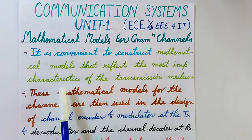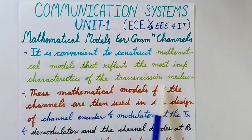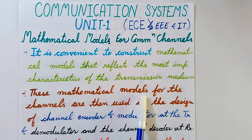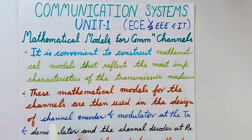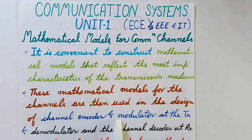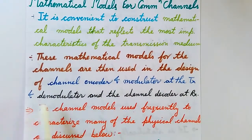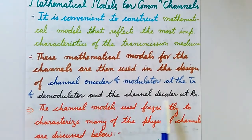It is convenient to construct mathematical models which reflect the most important characteristics of the transmission medium, that is, the physical channels. These mathematical models for the channels are then used in the design of the channel encoder and modulator at the transmitter, and of the demodulator and channel decoder at the receiver.